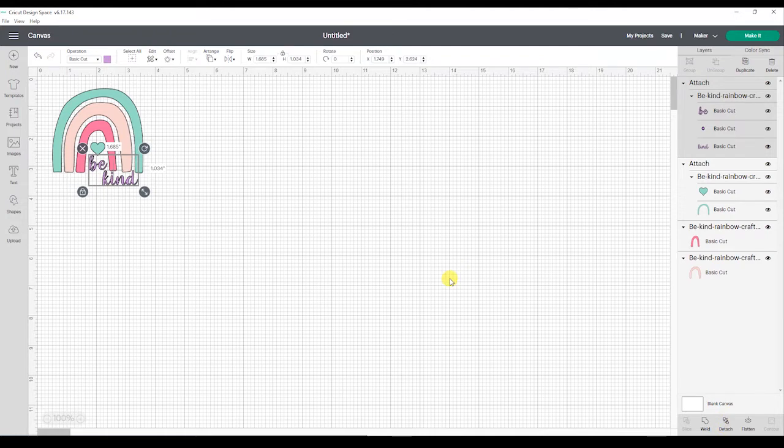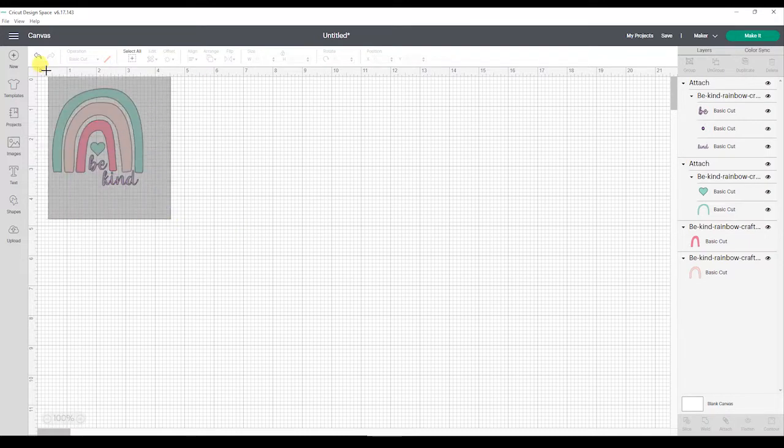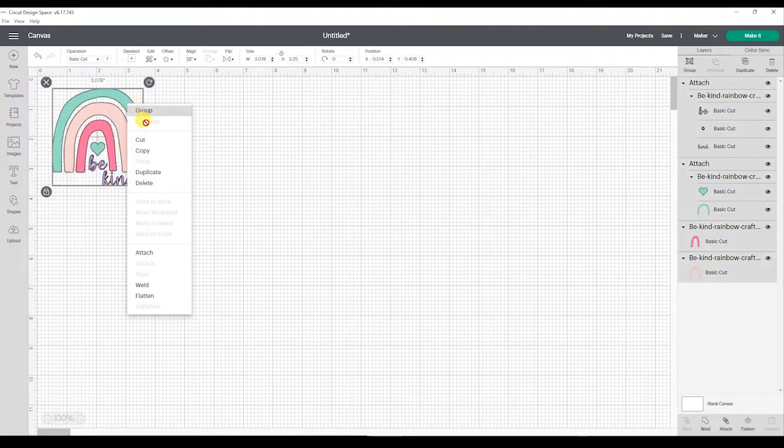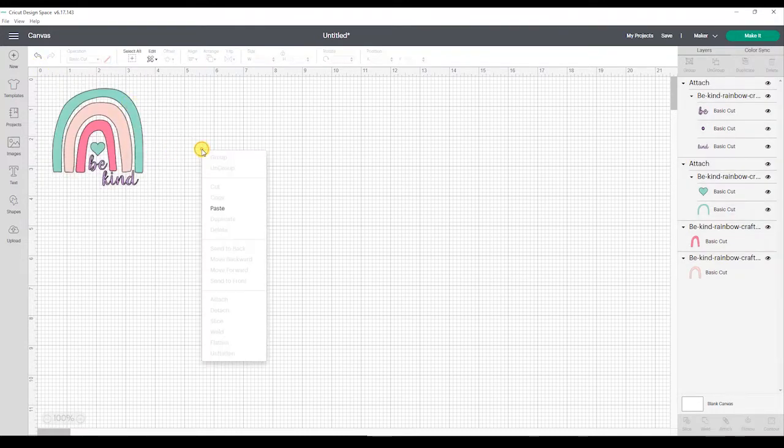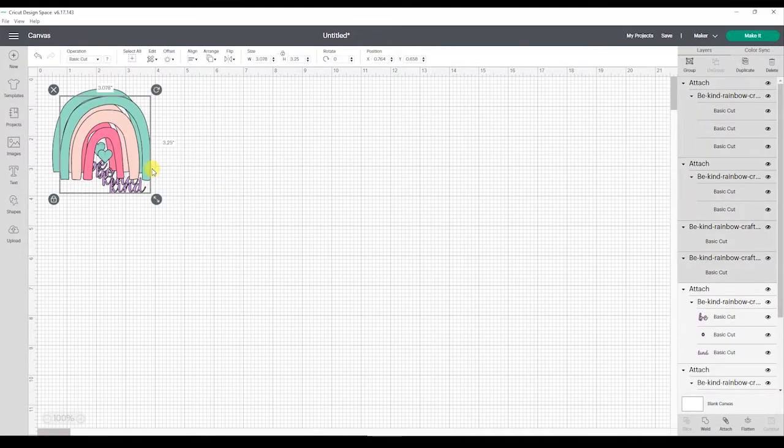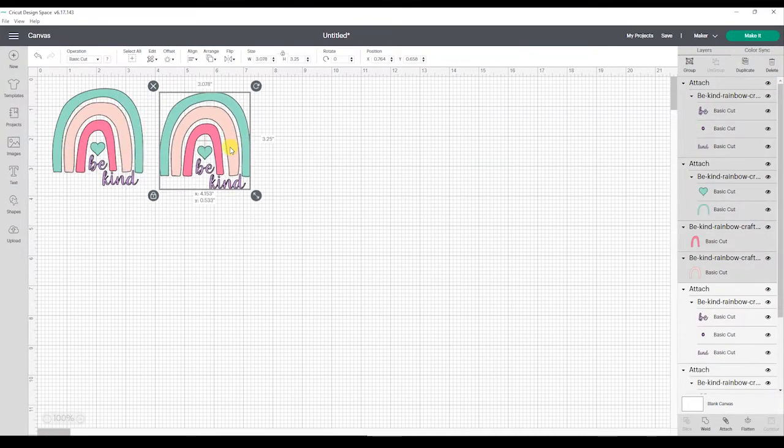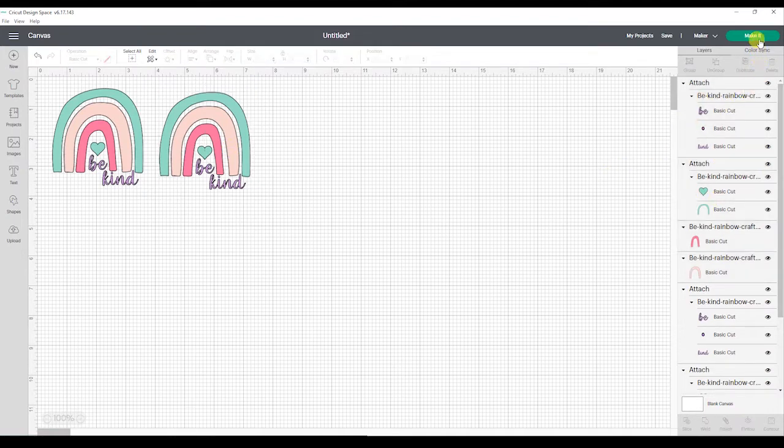Since we want to have this design on both sides of our mug we need to make a copy. So click and drag to select the entire image and then right click on your mouse and select copy. Then move your mouse away from the design, right click and select paste. Now you should have two copies of the design and they both should have the correct layers attached and ready to go.